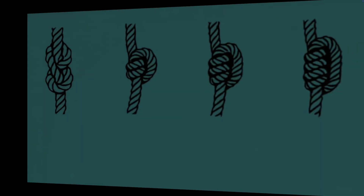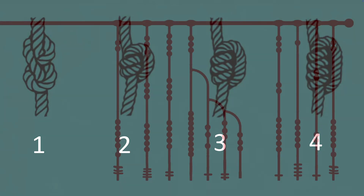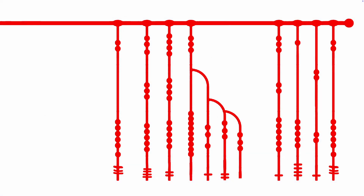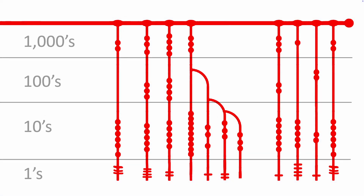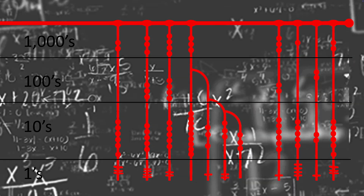The basic quipu is made up of one main cord with additional strings holding all the data. One knot shows the value of one, two knots could mean two, three knots could equal three, and so on. More importantly, quipu knots can be separated into groups of ones, tens, hundreds, thousands, tens of thousands, hundreds of thousands, and so on — you just add the value of the knots.